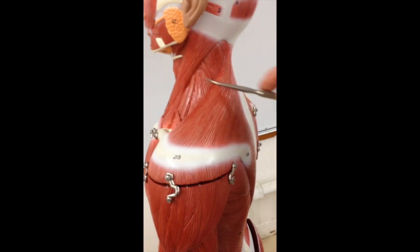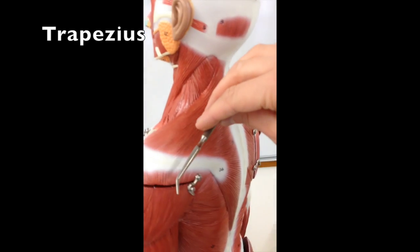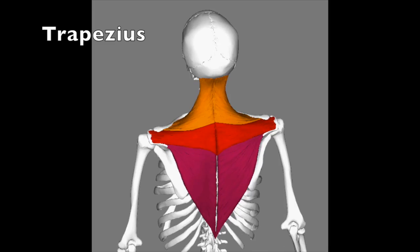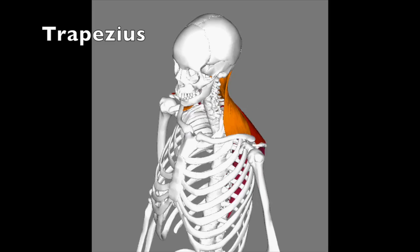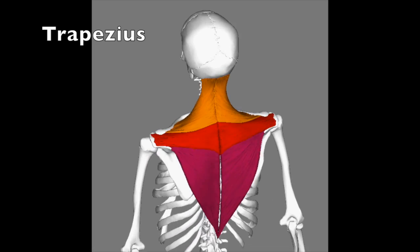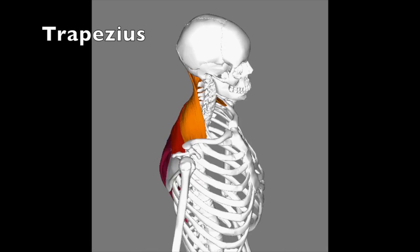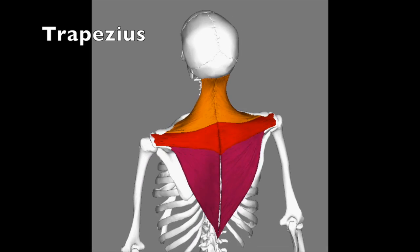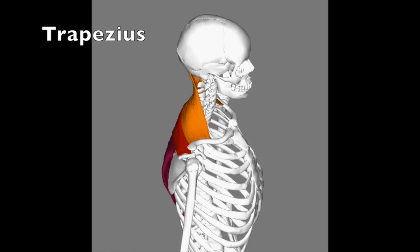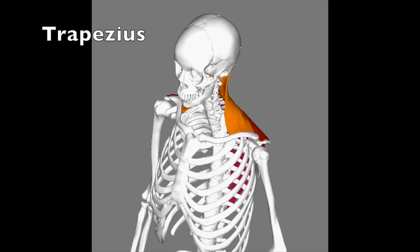The trapezius is a large triangular muscle on the back that runs from the shoulder to the base of the skull, the cervical, and thoracic vertebrae. It has origins on the occipital bone, the spinous processes of the 7th cervical and all thoracic vertebrae, and it inserts on the clavicle, spine, and acromion process of the scapula. It rotates and retracts the scapula, and the superior portion elevates the scapula, whereas the inferior portion depresses the scapula.